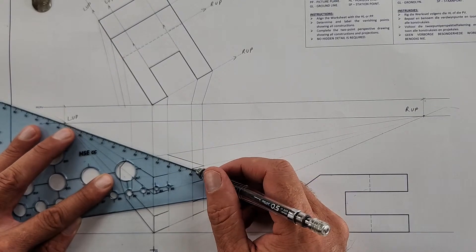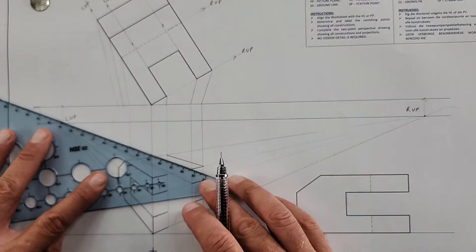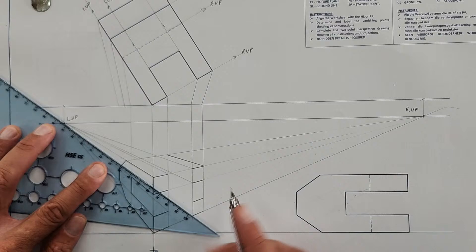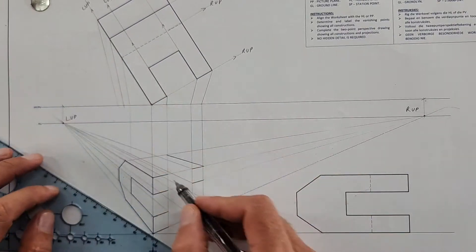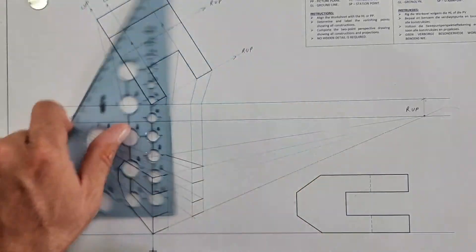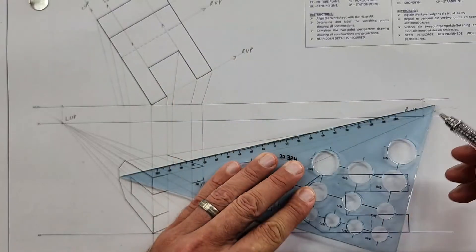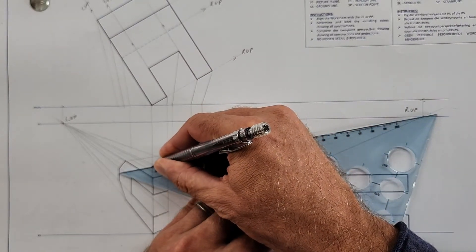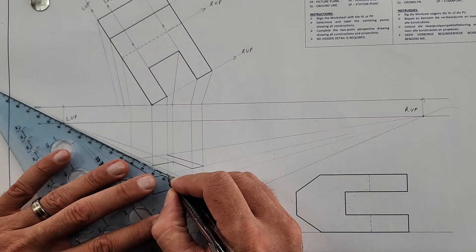Then these all go to the left vanishing point. Each one of these corners goes back to that left vanishing point. How far before something happens? It just goes back up to this point, aim that down, and there it changes direction again. Now it goes to the right vanishing point.